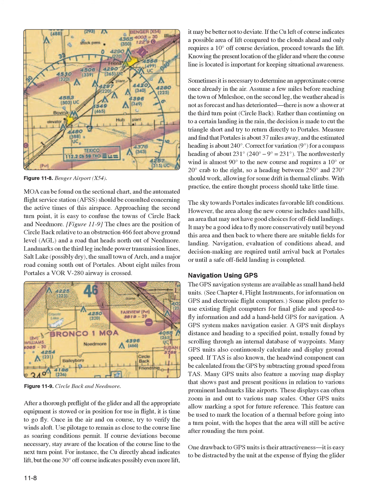Landmarks on the third leg include power transmission lines, Salt Lake (possibly dry), the small town of Arch, and a major road coming south out of Portales. About 8 miles from Portales, a VOR V-280 airway is crossed. After a thorough pre-flight with all equipment stowed, it is time to fly. Once in the air and on course, verify the winds aloft and use pilotage to remain as close to the course line as soaring conditions permit, maintaining awareness of the course line to the next turnpoint.